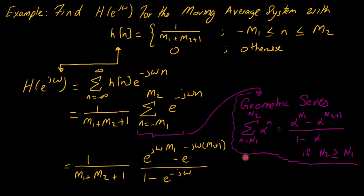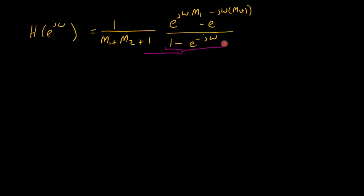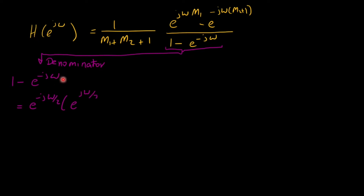We need to simplify this further to plot the frequency and phase responses. For the denominator, we have 1 − e^{−jω}. We factor out e^{−jω/2}, leaving e^{jω/2} − e^{−jω/2} inside. Multiplying these factors confirms the factoring is correct, since the exponents combine to give e^0 = 1 and e^{−jω} respectively.